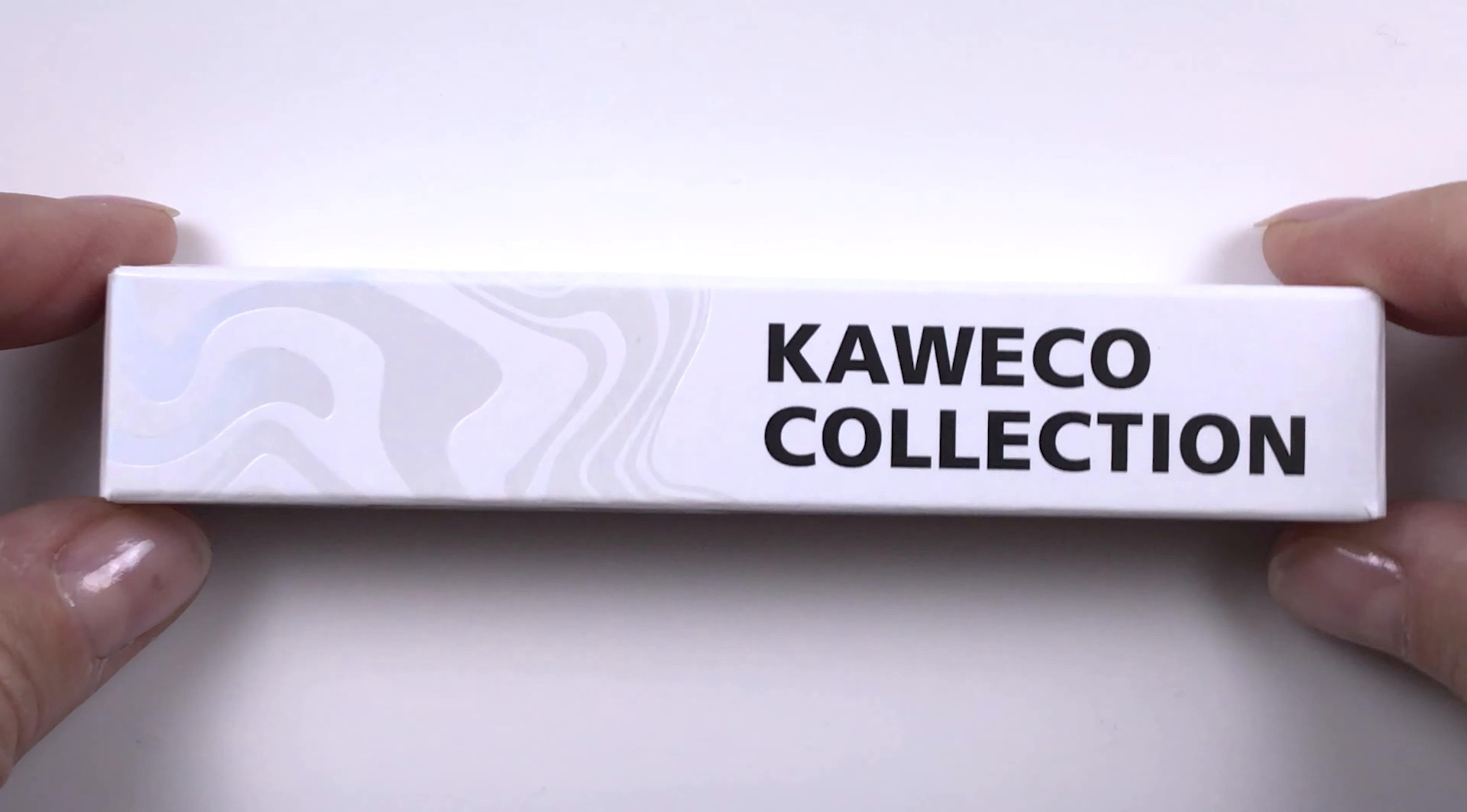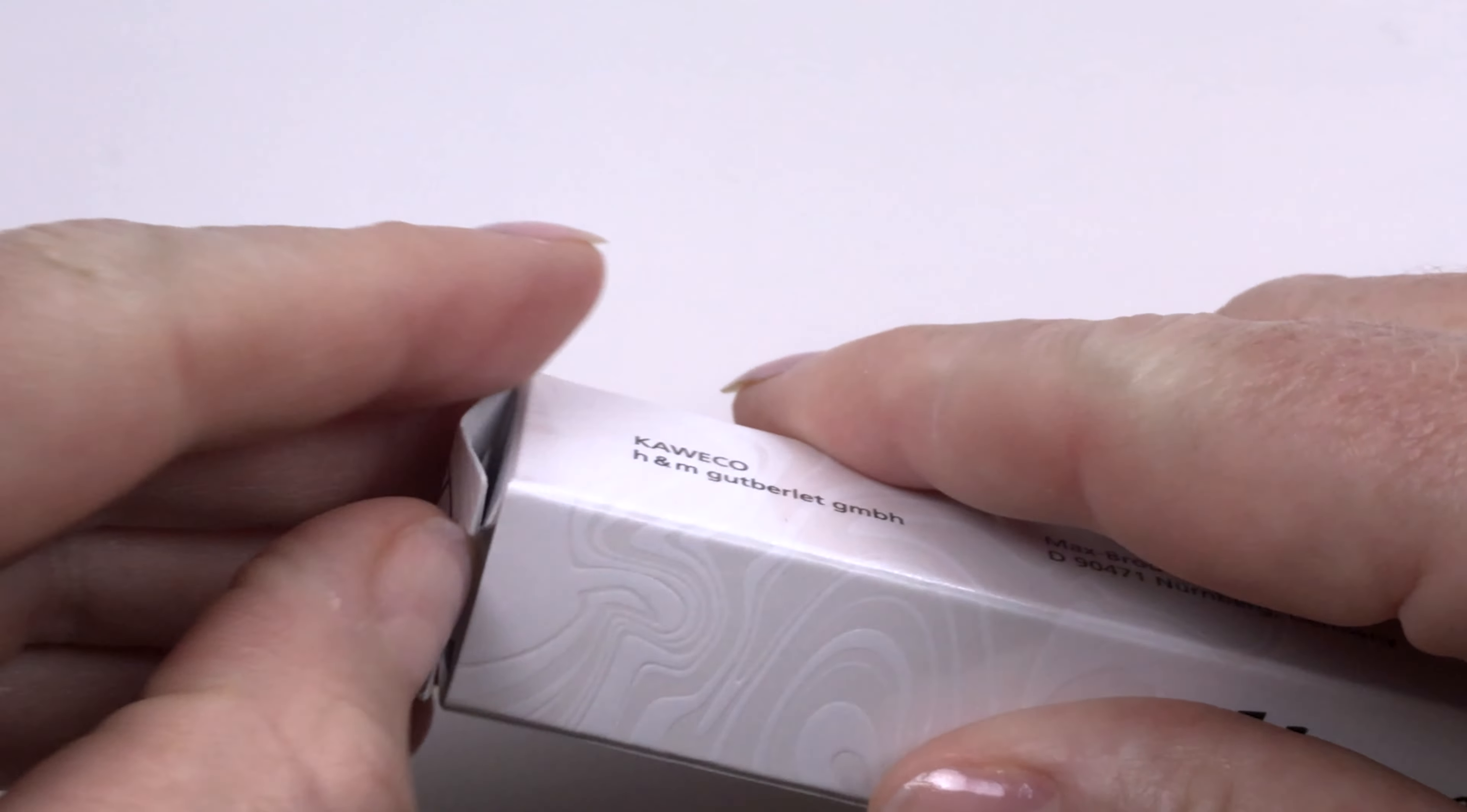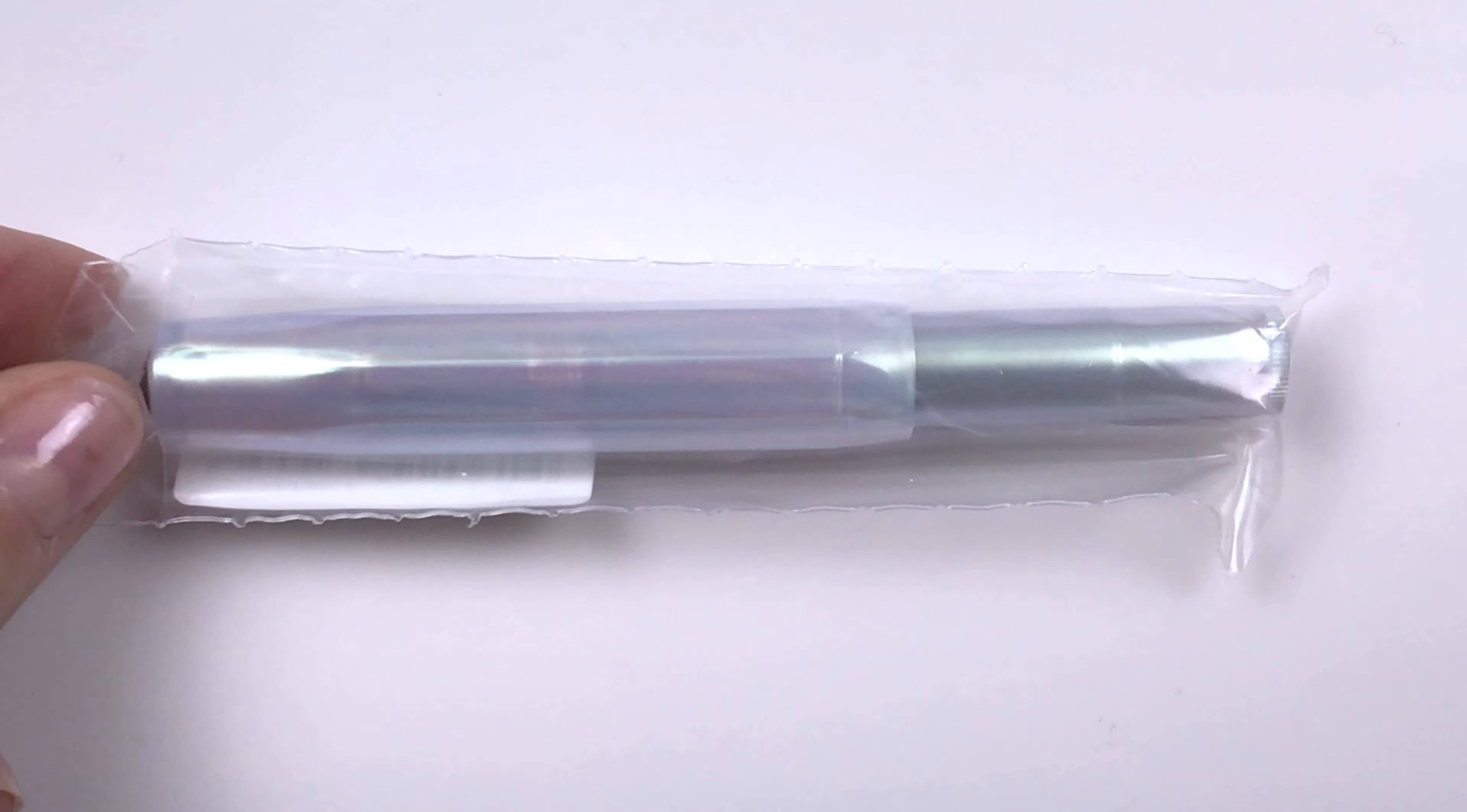You can't really see it on camera but that does have some iridescence to it, those little swirls. They just kind of look clear on camera but there is a little bit of rainbowy color. And here is the pen.